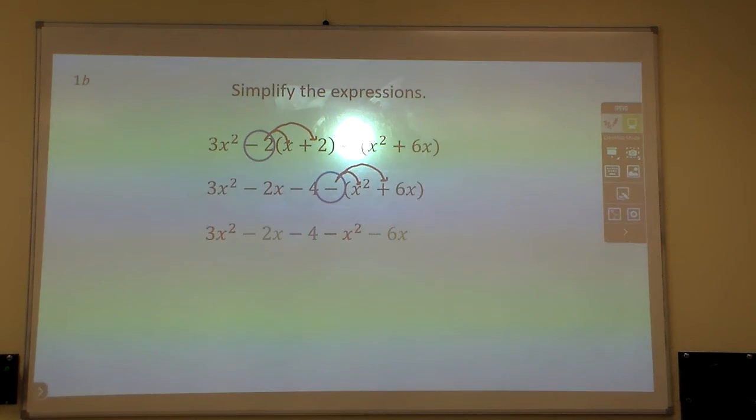Now I could combine like terms. So the 3x squared minus the x squared becomes a 2x squared. And negative 2x minus 6x becomes minus 8x, and the 4 is already there by itself.